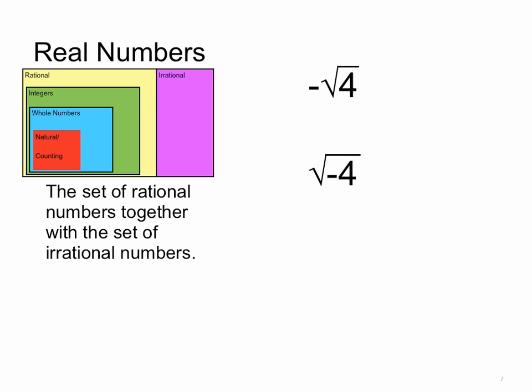So we have real numbers, the set of rational numbers together with the set of irrational numbers. That begs the question, what other kind of numbers do we have? Well, if we look at those examples there, negative square root of 4 and square root of negative 4.